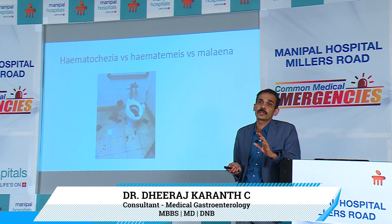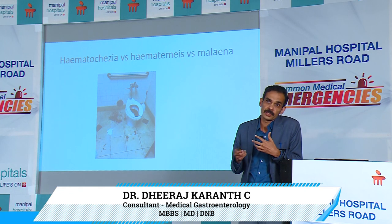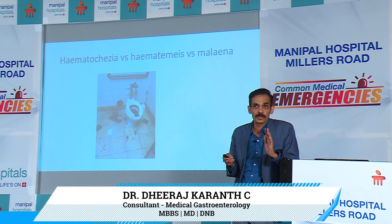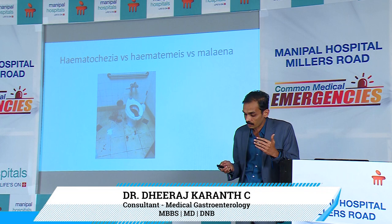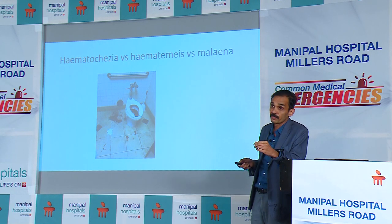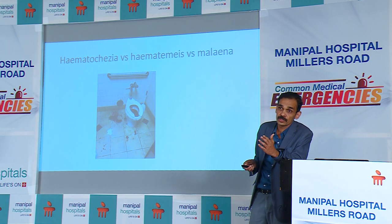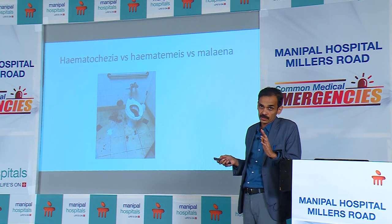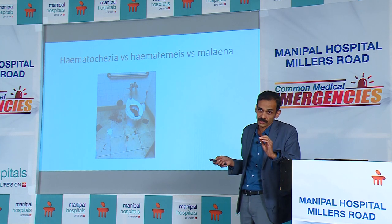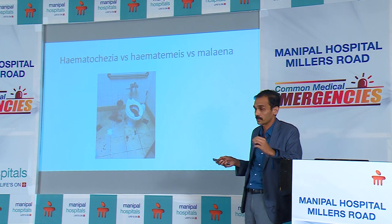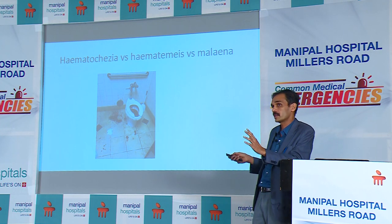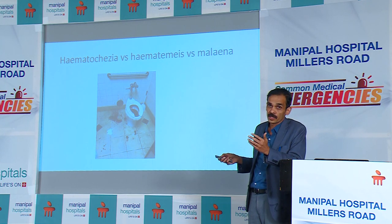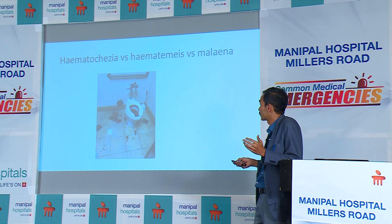About 10 to 30 percent of massive upper GI bleeds, where there is torrential blood loss, will present with fresh blood in the stools because the rapid transit of blood through the intestinal tract makes them present as hematochezia rather than melena. So in about 30 percent of cases this occurs, and we should be very careful in history taking and clinical examination. The patient's hemodynamic status and the subtleties of history tell us whether it is an upper or lower GI bleed.